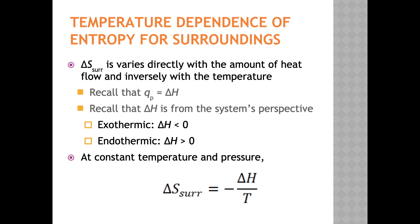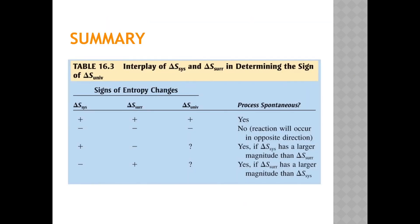As a result, the entropy change for the surroundings is directly proportional to the amount of heat and inversely proportional to the Kelvin temperature. Since we're only considering constant pressure systems, the heat flow equals the enthalpy change, delta H, of the system. Delta H is negative for exothermic and positive for endothermic processes. Therefore, for a system at constant pressure and temperature, delta S of the surroundings equals the negative of delta H of the system divided by the Kelvin temperature. This table summarizes the signs of delta S for the system, surroundings, and universe.